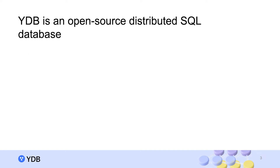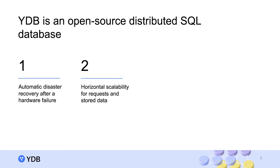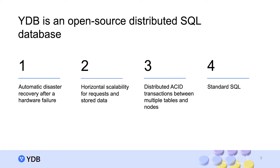YDB is a distributed SQL database that remains available after node or availability zone failure, and scales automatically up to millions of requests per second across dozens of petabytes of data. There is no need to compromise consistency because YDB provides ACID transactions across multiple tables running on different cluster nodes. It's an open source project available under the Apache 2 license.